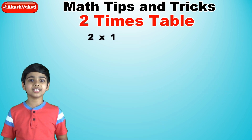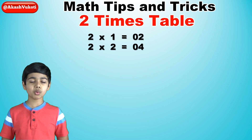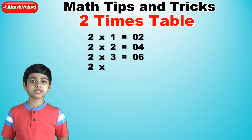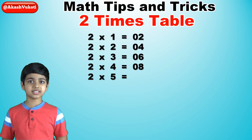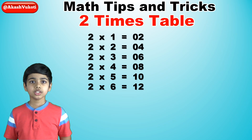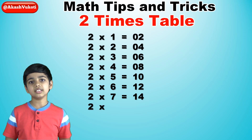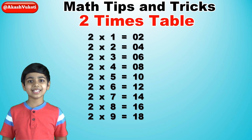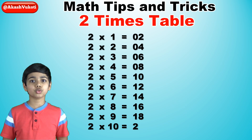Two times one is two. Two times two is four. Two times three is six. Two times four is eight. Two times five is ten. Two times six is twelve. Two times seven is fourteen. Two times eight is sixteen. Two times nine is eighteen. And finally, two times ten is twenty.